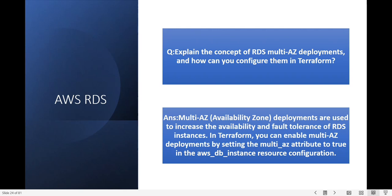Next question: explain the concept of RDS Multi-AZ deployment and how can you configure it in Terraform? Multi-AZ deployments are used to increase the availability and fault tolerance of RDS instances. You can enable Multi-AZ deployments by setting the multi_az attribute to true in the AWS DB instance resource configuration.